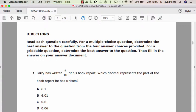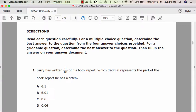Larry has written 6 tenths of his book report. Which decimal represents the part of the book report he has written? You may pause this recording at this time and figure the answer to the problem. Then start the recorder over again. Or you may backtrack and listen to this question a second time.